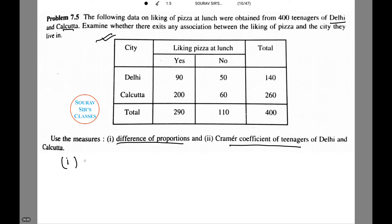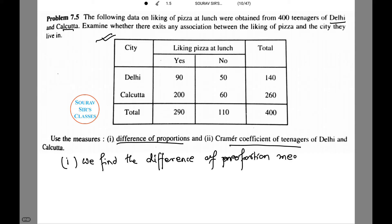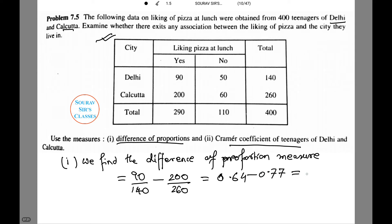First, we find the difference of proportions. This equals 90/140 minus 200/260, which equals 0.64 minus 0.77, which equals −0.13.